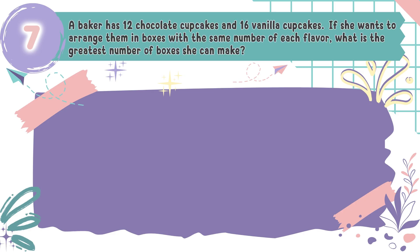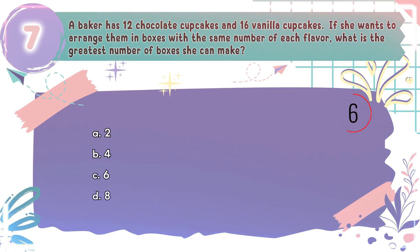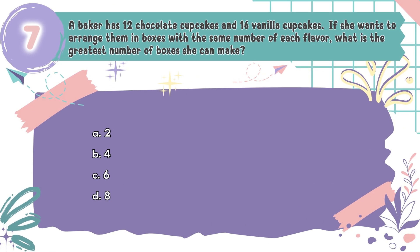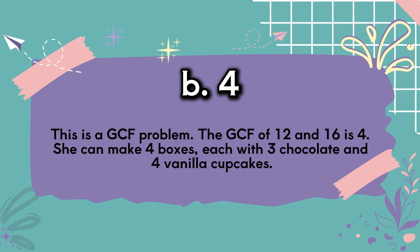Question number 7: A baker has 12 chocolate cupcakes and 16 vanilla cupcakes. If she wants to arrange them in boxes with the same number of each flavor, what is the greatest number of boxes she can make? The choices are A: 2, B: 4, C: 6, D: 8. The correct answer is B, 4. This is a GCF problem. The greatest common factor of 12 and 16 is 4. She can make 4 boxes, each with 3 chocolate and 4 vanilla cupcakes.